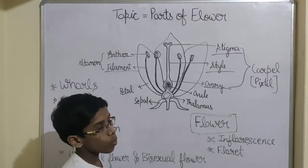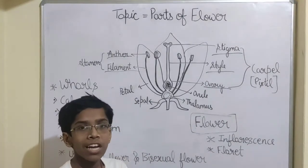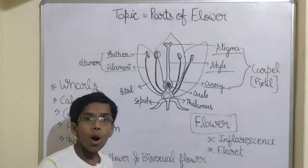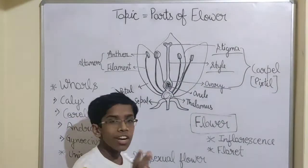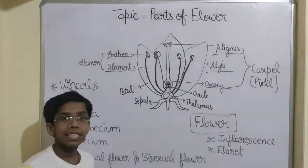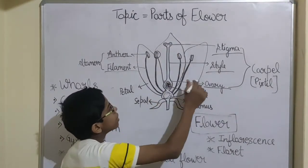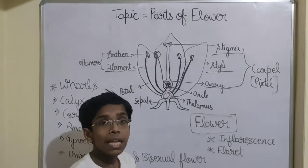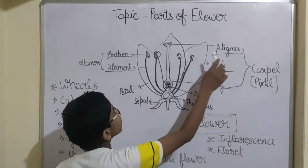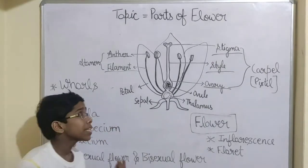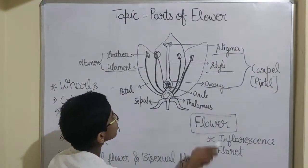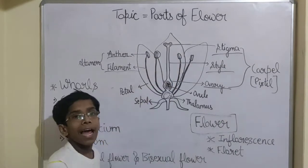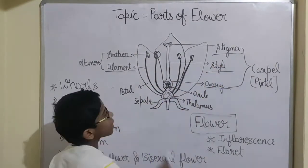What is stigma, what is style, and what is ovary? Ovary is a flask-like structure at the bottom of the carpel. It is connected to a tube-like structure which is known as style. The style has a tip which is known as stigma. So the tip of the style is known as stigma.